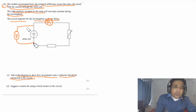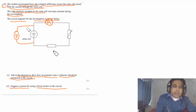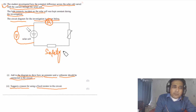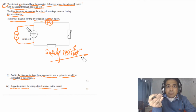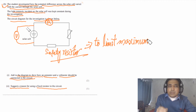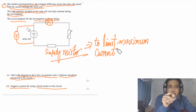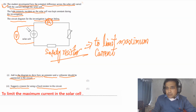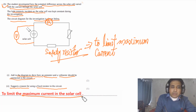The second part asks for a reason for using a fixed resistor in the circuit. This fixed resistor is a safety resistor. Its purpose is to limit the maximum current in the solar cell — meaning the current cannot exceed a certain maximum value. For one mark, write: to limit the maximum current in the solar cell.